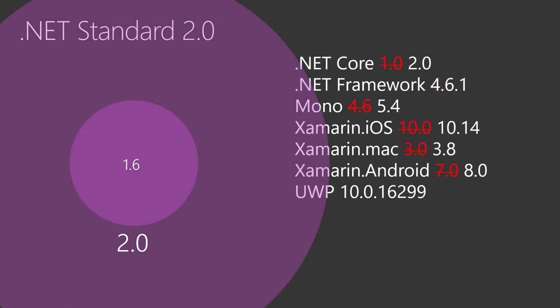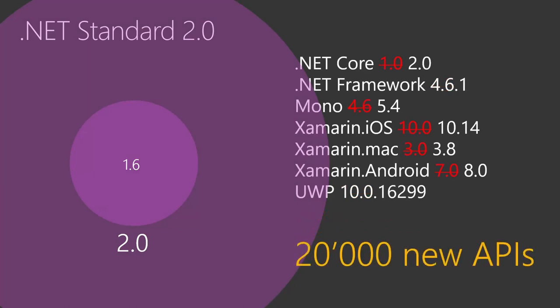The same thing applies with .NET Standard 2.0. Now we have something like 20,000 new APIs, so it's huge. But .NET Standard 2.0 supports even fewer frameworks. For example, if you had an old ASP.NET Core 1.0 application running on Linux, and you decide you want to use a class library targeting .NET Standard 2.0, then you have to upgrade your ASP.NET application to 2.0 as well, which might be an issue.